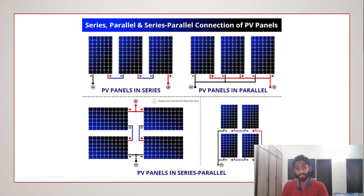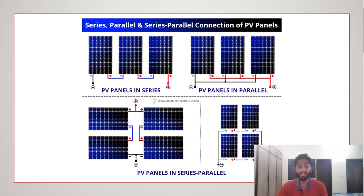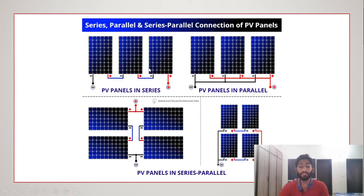Looking at the figure for PV panels in series: on module one, the negative terminal connects to the negative terminal of the inverter, and the positive terminal connects to the inverter's positive terminal. In between the modules, the positive terminal of one connects to the negative terminal of the next — that's a series connection.